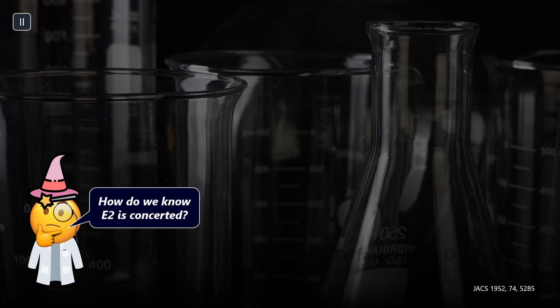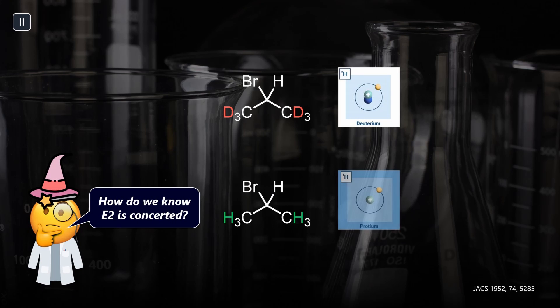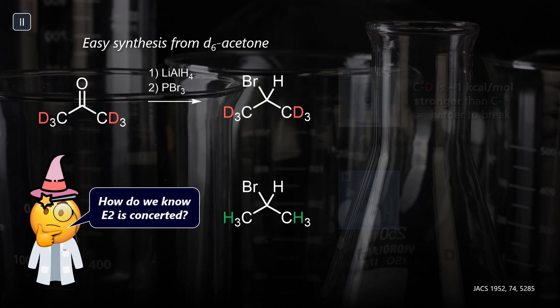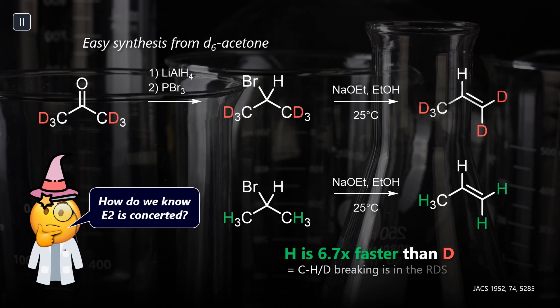How can we be sure that the concerted E2 mechanism is correct? One piece of evidence are kinetic isotope effects. Maybe you watched my previous video or have heard of them already. Deuterium behaves like hydrogen, but due to its heavier mass, forms stronger bonds with carbon. Elimination of deuterated 2-bromopropane is almost seven times slower versus hydrogen.